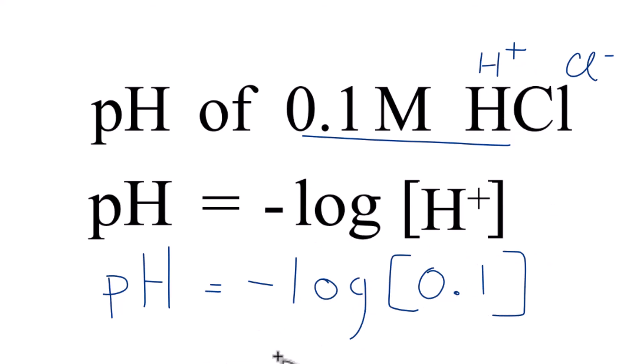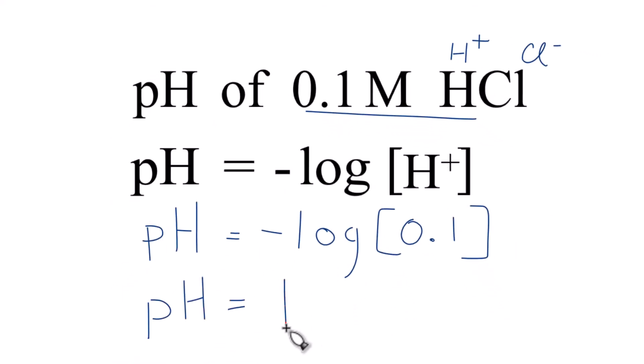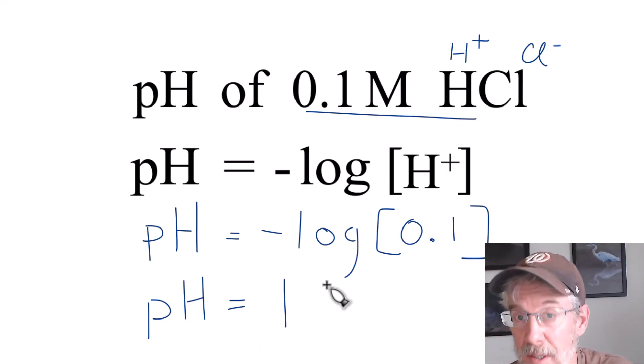We end up with our pH equaling 1. So the negative log of 0.1 is just 1. We look at our 0.1 molar aqueous solution of HCl. It has a pH of 1, and we know anything under 7 is going to be acidic. It's a pretty acidic solution.